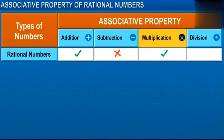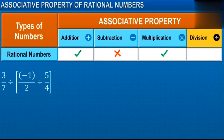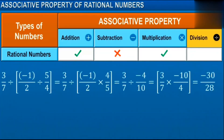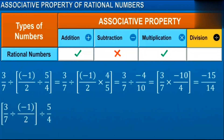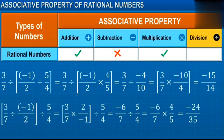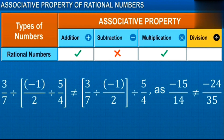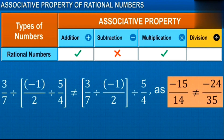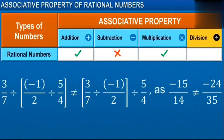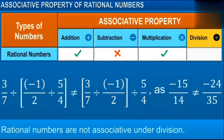Are rational numbers associative under division too? Performing the calculations by regrouping the numbers as done before, we find that the results are not the same. So, rational numbers are not associative under division.